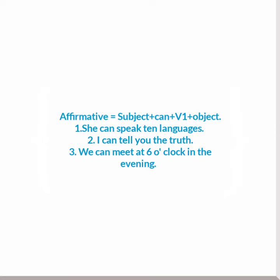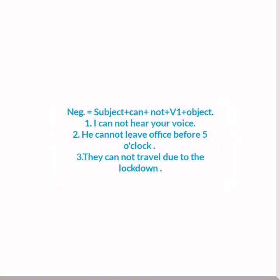So now let's move on to how to form sentences. First of all, let's take affirmative sentences. For creating an affirmative sentence, put subject, then 'can', then the first form of the verb, then object. Example: 'She can speak ten languages' — meaning woh das bhashain bol sakti hai. 'I can tell you the truth' — main tumhe sach bata sakta hoon. 'We can meet at six o'clock in the evening' — hum sham ko chhe baje mil sakte hain.